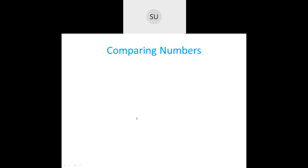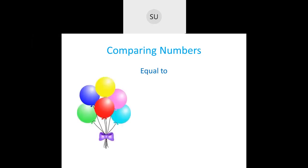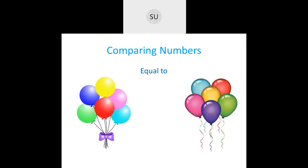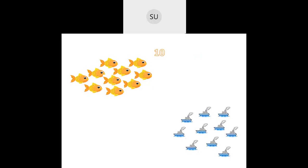When comparing numbers, the first concept is 'equal to.' Whenever you have the same number of things or objects, it means they are equal. Here we have six balloons and another six balloons, so six is equal to six. This sign is used to show the equal-to sign. Another example: there are ten ships and ten fishes, so ten is equal to ten.